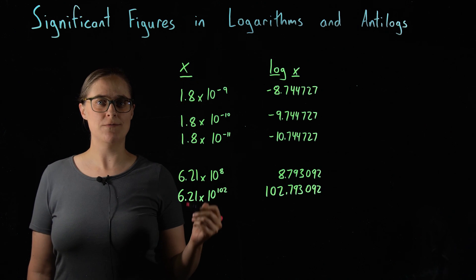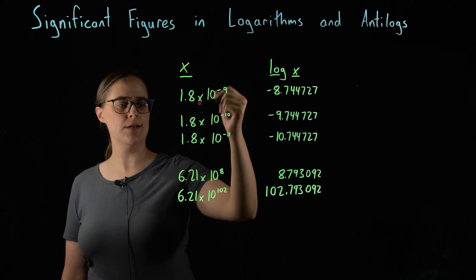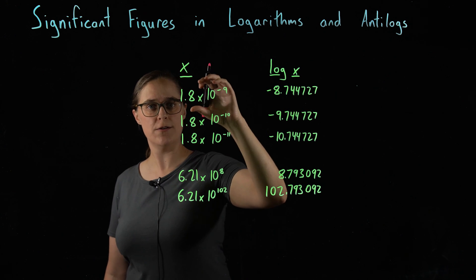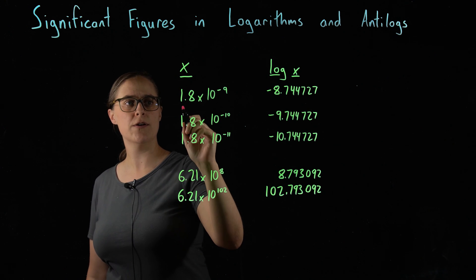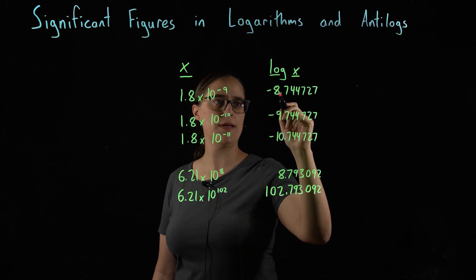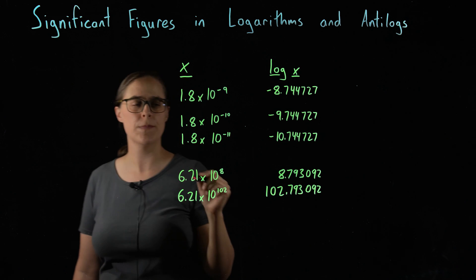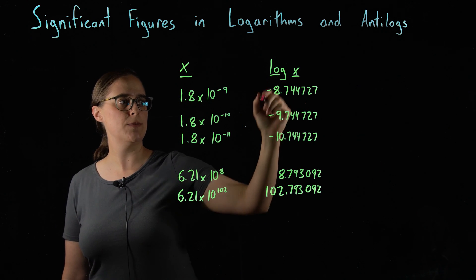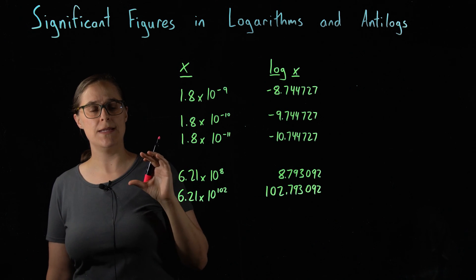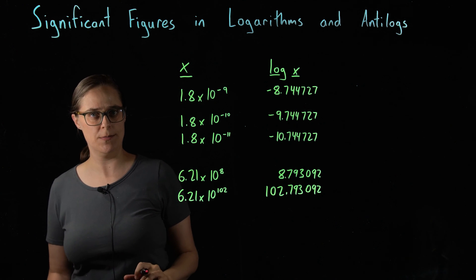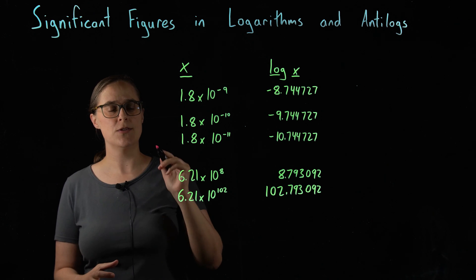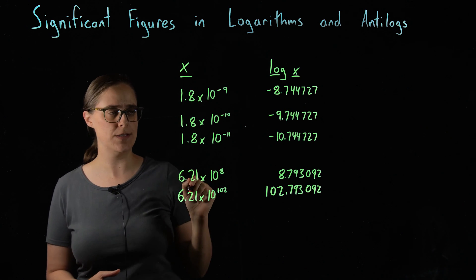Let's look at some examples involving logarithms. In this column I have a bunch of numbers, and in this column I have the logs of those numbers. In other words, the log of 1.8 times 10 to the minus ninth is equal to negative 8.744727. Our goal is to properly round these numbers. These are the numbers that a calculator would give, and calculators do not care about significant figures — they give as many digits as they possibly can. So we need to apply our rule to round these numbers.